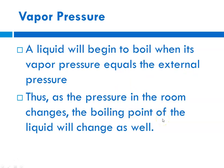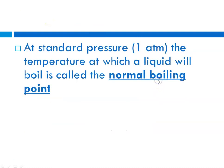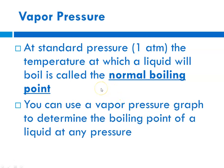If you've looked at a cake mix or muffin mix, you'll see it has high altitude directions — that's because the pressure above a liquid changes its boiling point. Boiling point is defined as when the vapor pressure equals the external pressure. At the top of Mount Everest, where atmospheric pressure is very low, water might boil at about 90°C, whereas at sea level water boils at 100°C. The normal boiling point of a liquid is the boiling point at standard pressure, 1 atm, and for water that is 100°C.